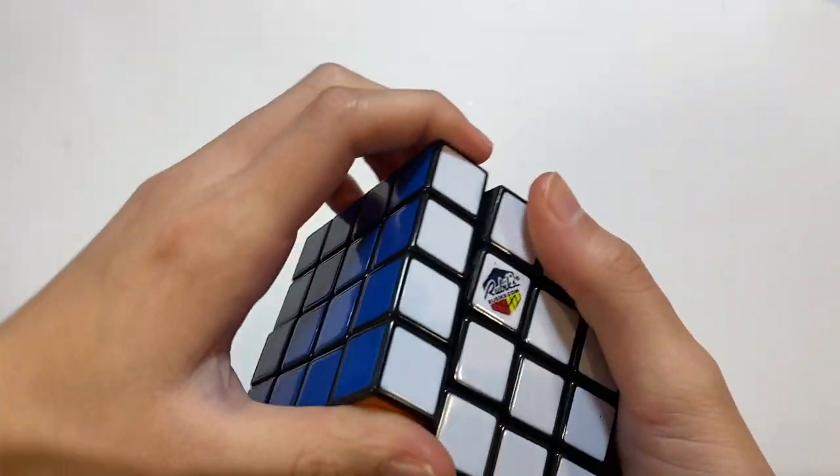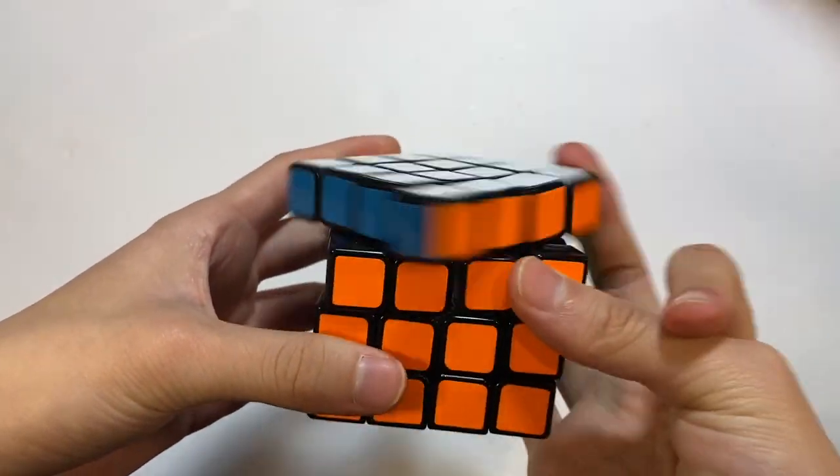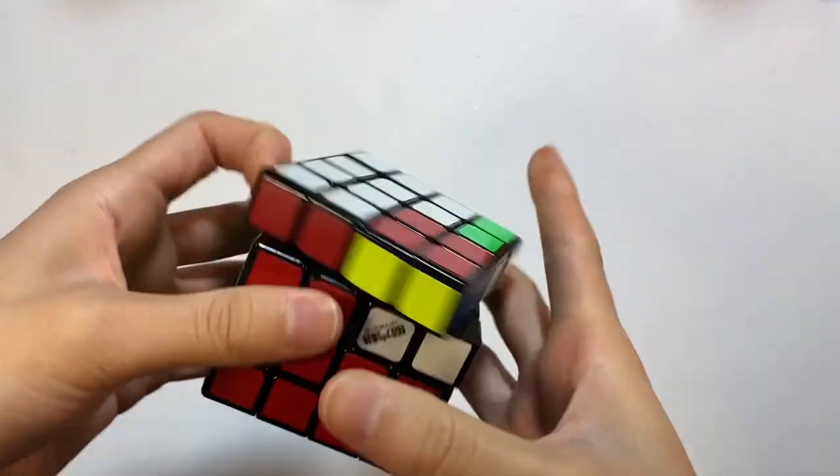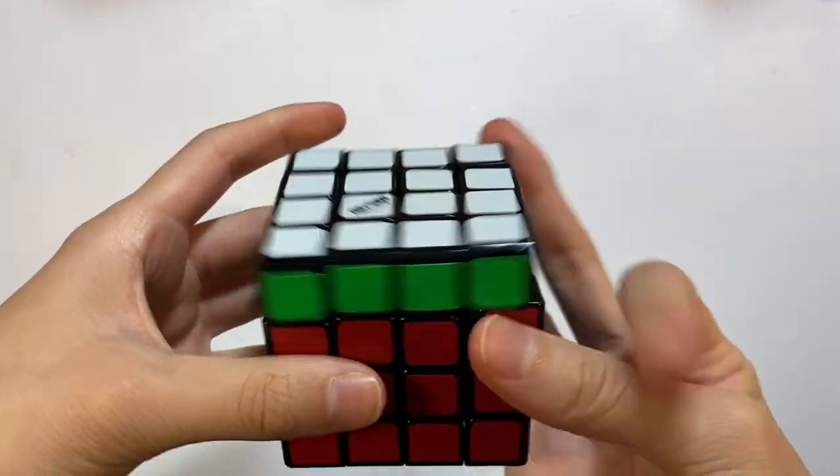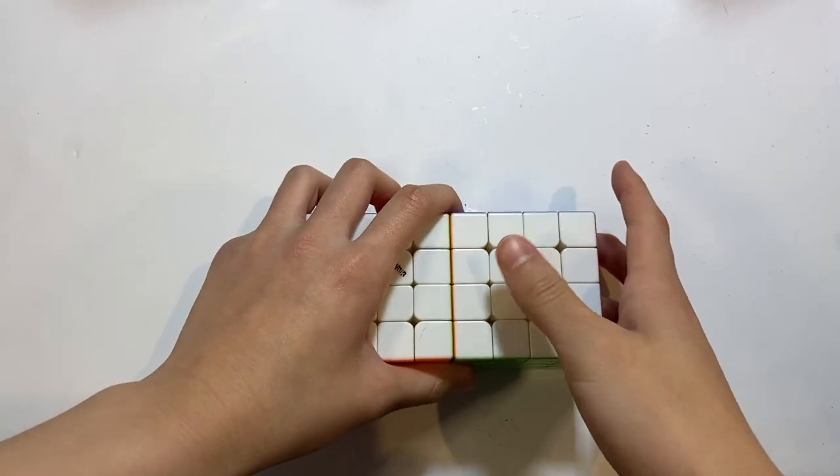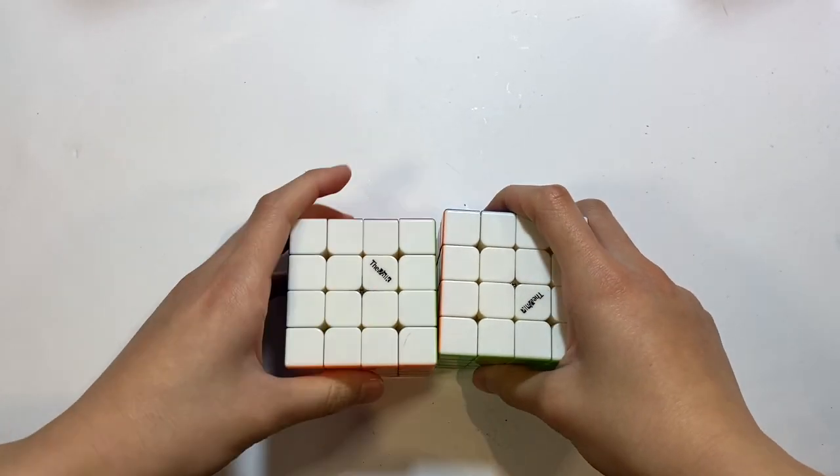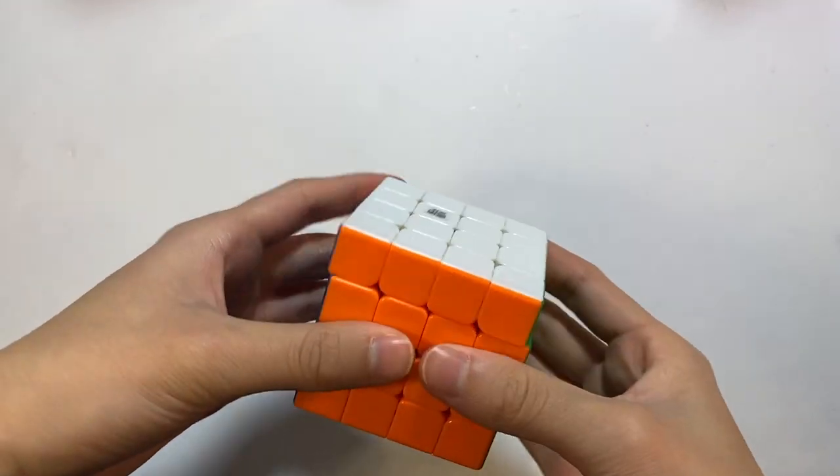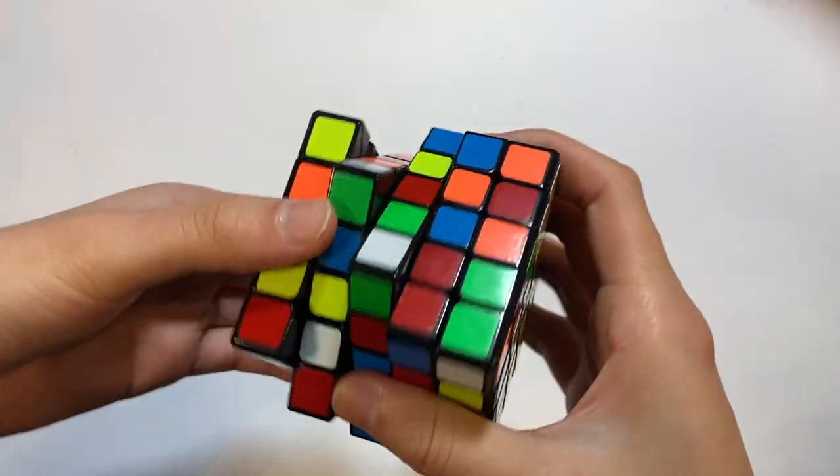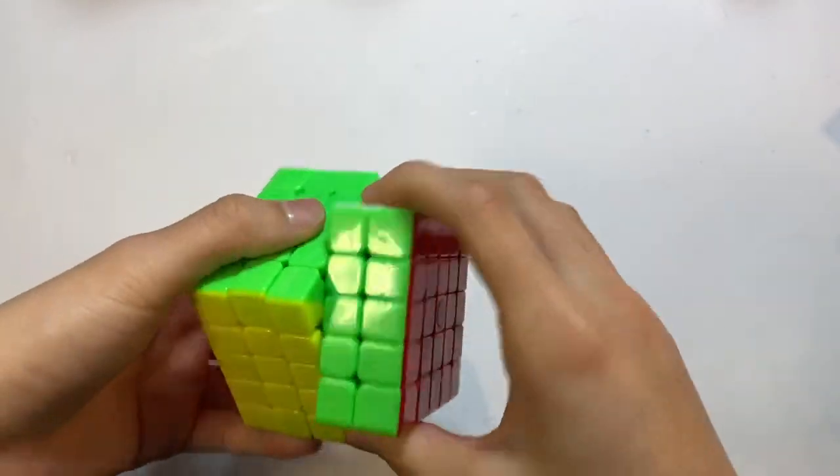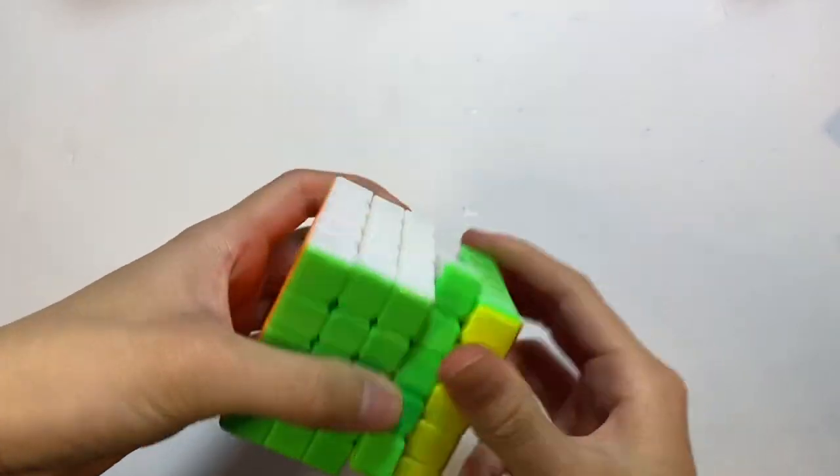The Rubik's 4x4, also known as the Rubik's Revenge. A Moyu Aosu 4x4. The YJ Guansu 4x4. This is the Qi Thunderclap 4x4. The Qi Wuchui 4x4. Two Valk 4Ms. One is the strong version and one is just the normal version. Here is the Angstrom Aosu GTS2M. This is the Moyu Aosu WRM. This is the Bo Chuang 5x5. The Valk 5M. The Angstrom Aosu 5x5 GTS-M.